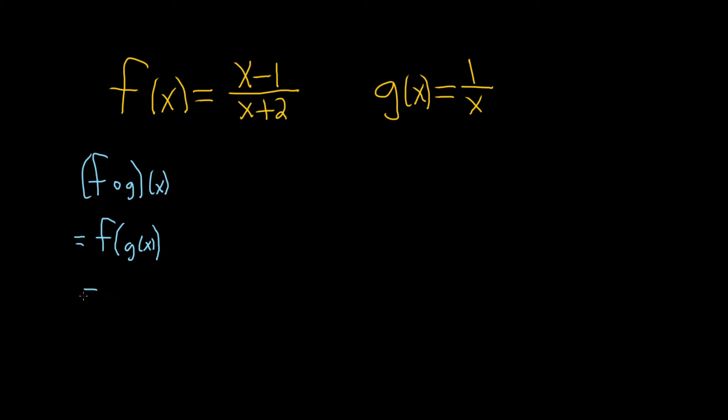So what you do now is you replace the inside piece. You replace the g. So this is really f of, and your g is 1 over x. So you simply just replace that with 1 over x. So we have f of 1 over x.